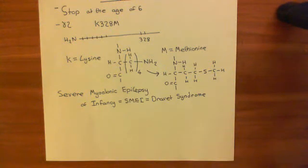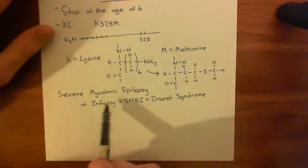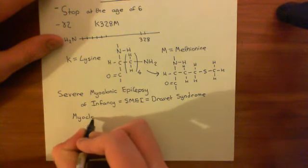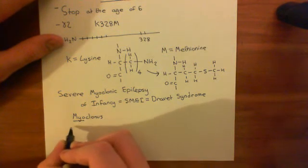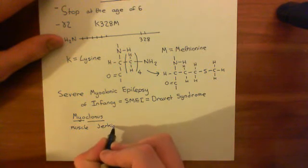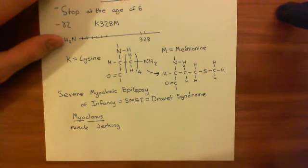One side of the body will start undergoing these involuntary muscle contractions. These are febrile seizures, generally brought on by exposure to high temperatures. What is really pronounced in these seizures — and why it's called severe myoclonic epilepsy of infancy — is that they are really jerky. Myoclonic means jerks of muscle: myo means muscle, clonus means jerks. So you get huge jerks of the muscle on one side of the body, triggered by high temperatures.